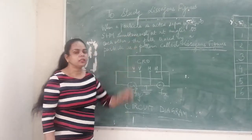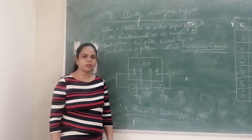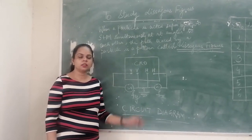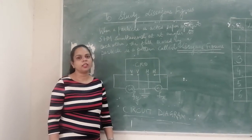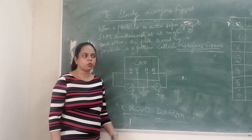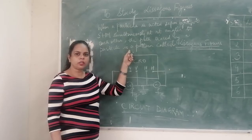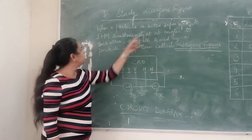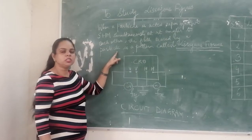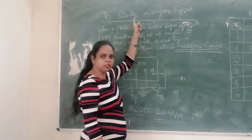When a particle is acted upon by two simple harmonic motions simultaneously at right angles, means one harmonic motion is at x-axis and the other harmonic motion is acting at y-axis. When both the harmonic motions are acting perpendicular to each other on one particular particle, then the path traced by the particle gives a certain pattern. This pattern is called the Lissajous figures.